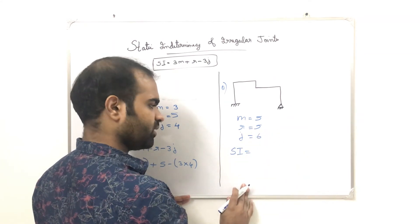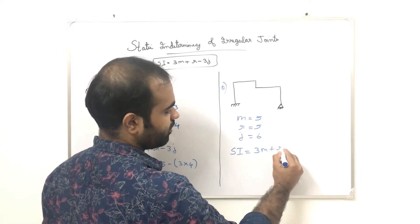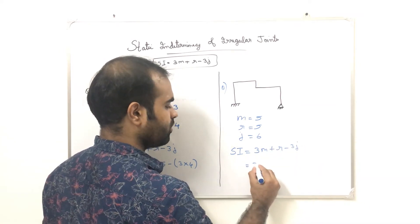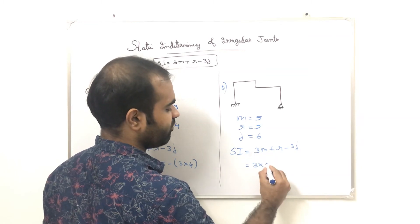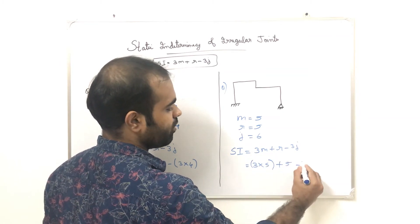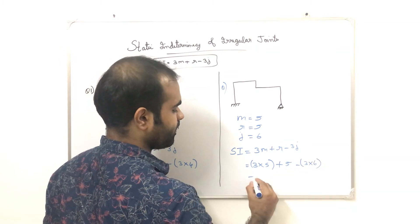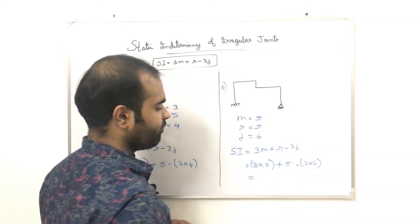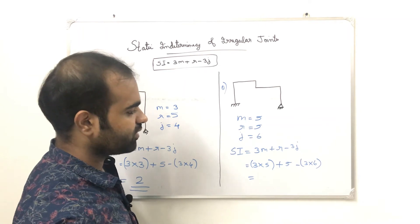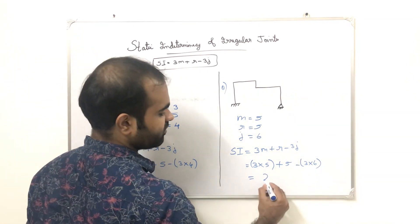For the next example: 3m + r − 3j, where m = 5, reaction force r = 5, j = 6. So: 3(5) + 5 − 3(6) = 15 + 5 − 18 = 20 − 18 = 2.